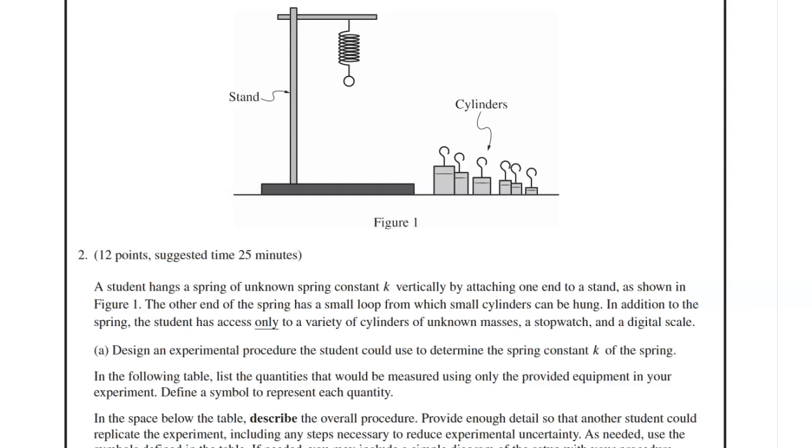A student hangs a spring of unknown spring constant k vertically by attaching one end to a stand, as shown in Figure 1. The other end of the spring has a small loop from which small cylinders can be hung. In addition to the spring, the student has access only to a variety of cylinders of unknown masses, a stopwatch, and a digital scale.